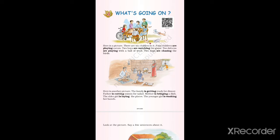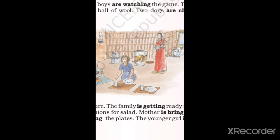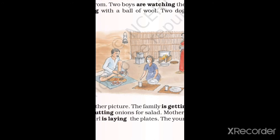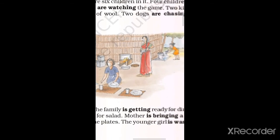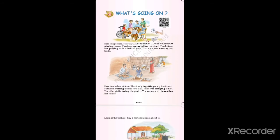'Mother is bringing a dish. The elder girl is laying the plates. The younger girl is washing her hands.' So look at the picture — the father is cutting onions, the elder girl is laying the plates for dinner, the mother is bringing dishes, and the little girl is washing her hands for dinner.